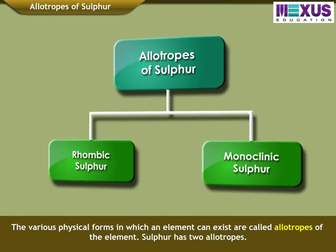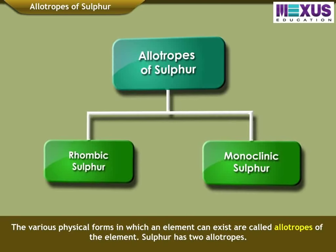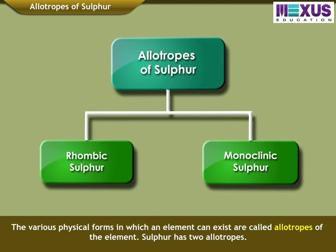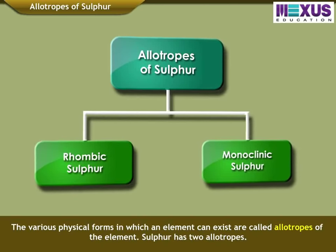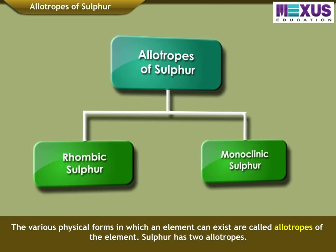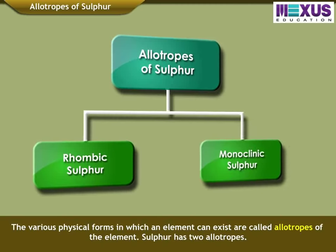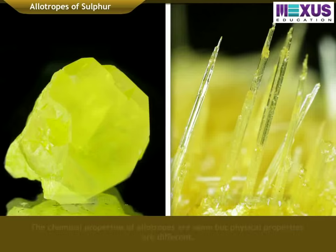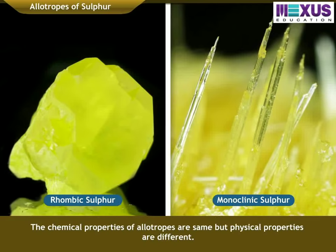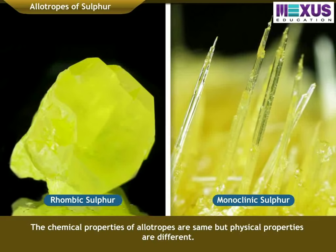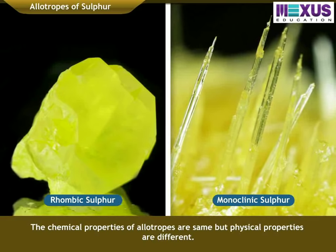The various physical forms in which an element can exist are called allotropes of the element. Sulphur has two allotropes. The chemical properties of allotropes are the same, but physical properties are different.